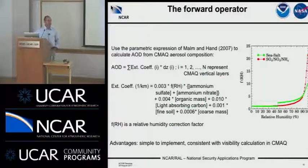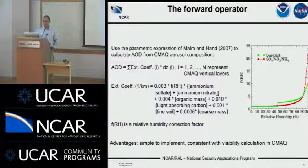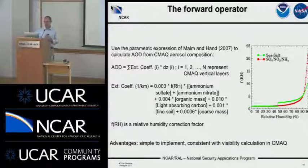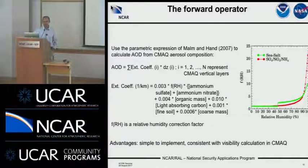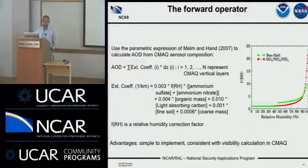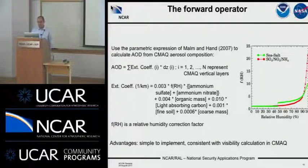For the forward operator, this is the formula we implemented, based on an expression proposed by Malm and Anne in 2007. It uses as input different variables from the CMAQ prediction, and an important characteristic is that the extinction coefficient depends on a parametric formulation of relative humidity, shown in the graph on the right. The advantage of this implementation is a very simple formula, which makes it easy to compute the adjoint with available mathematical tools — the adjoint being a component needed for the cost function calculation in the GSI system. This calculation is also consistent with the visibility calculation currently available in CMAQ.